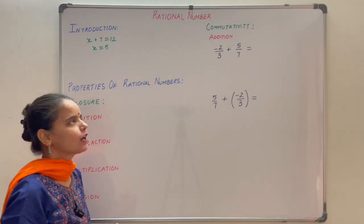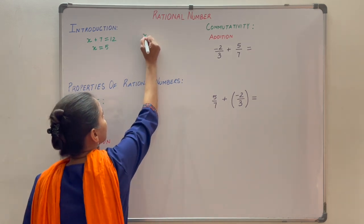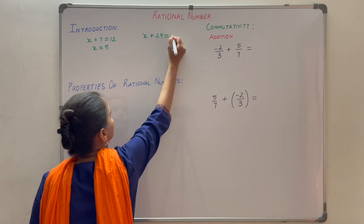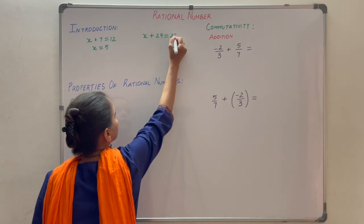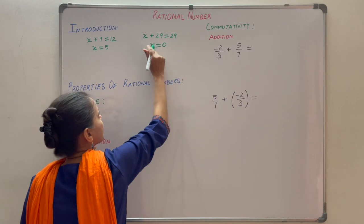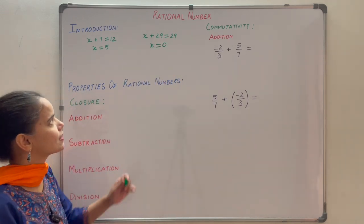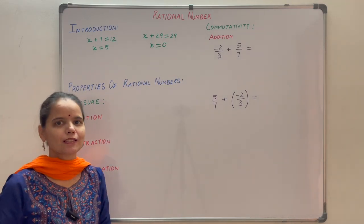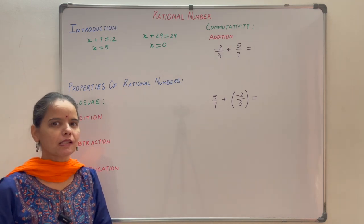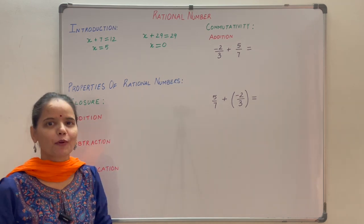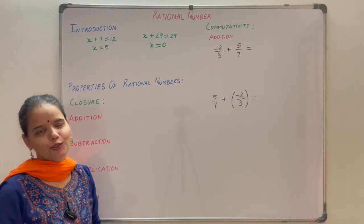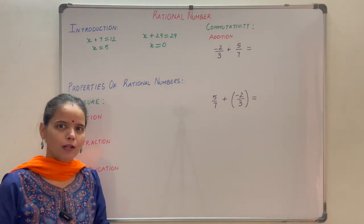On the other hand, if you have an equation like x plus 29 is equal to 29, so x is equal to 0. X equals 0 is the solution of this equation. If you just knew about natural numbers, then the solution of this type of equation is not possible. For this you should be aware of whole numbers.